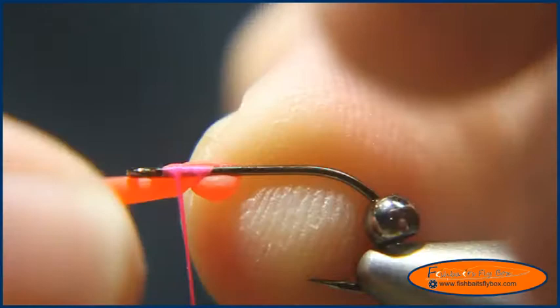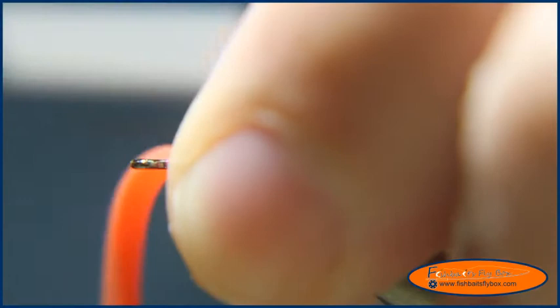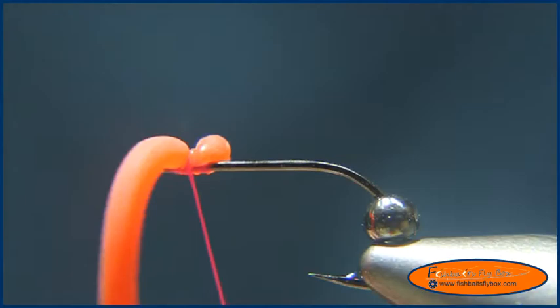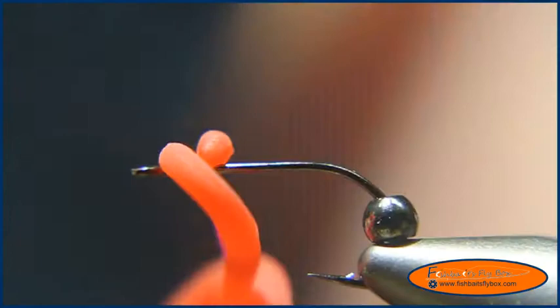What I like to do is I like to roll it over to the bottom of the fly and I'll put a couple of lighter wraps, about three of them. And then I'll hold it and I'll cinch down on it until it rolls at the top of the fly. And then I'll bring and wrap the thread wraps back around it.